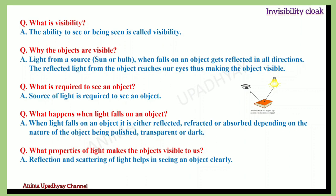Why are objects visible? When light from a source — such as the sun, a bulb, or a torch — falls on an object, it gets reflected in all directions and the reflected light reaches our eyes, thus making the objects visible to us. As you can see in the figure, light from a bulb falls on a book, gets reflected, and that reflected light reaches our eyes so we can see the book.